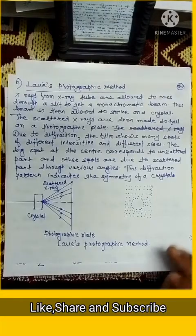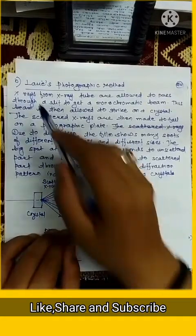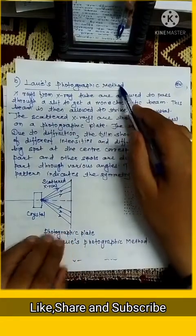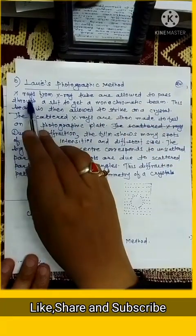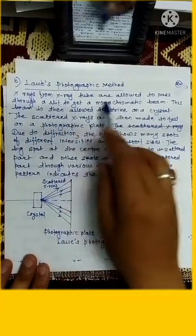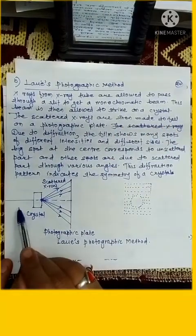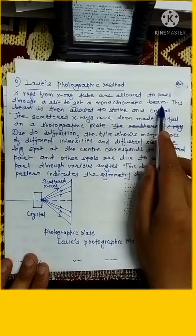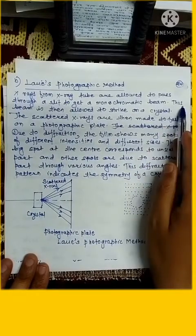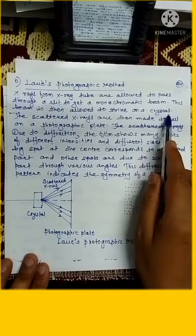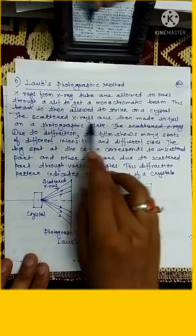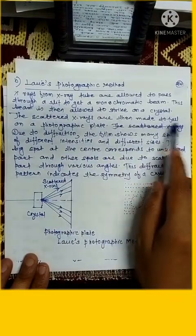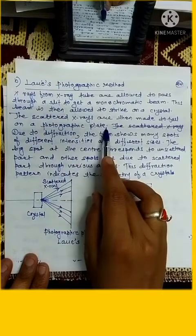Now we are going to see Laue photographic method. X-rays from X-ray tube are allowed to pass through a slit to get monochromatic beam of light. This beam is then allowed to strike on a crystal. The scattered X-rays are then made to fall on photographic plate.